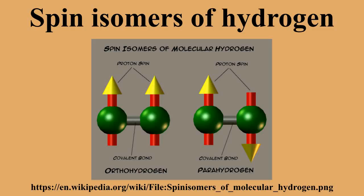Other molecules and functional groups containing two hydrogen atoms, such as water and methylene, also have ortho and para forms, but this is of little significance for their thermal properties. Their ortho-para ratios differ from that of dihydrogen.